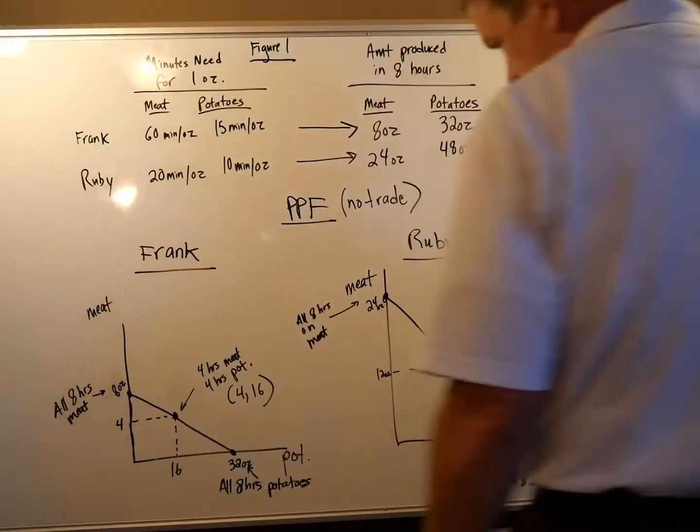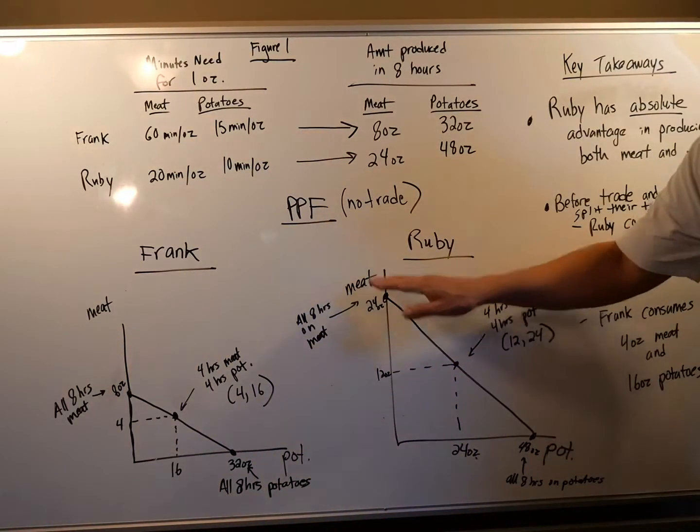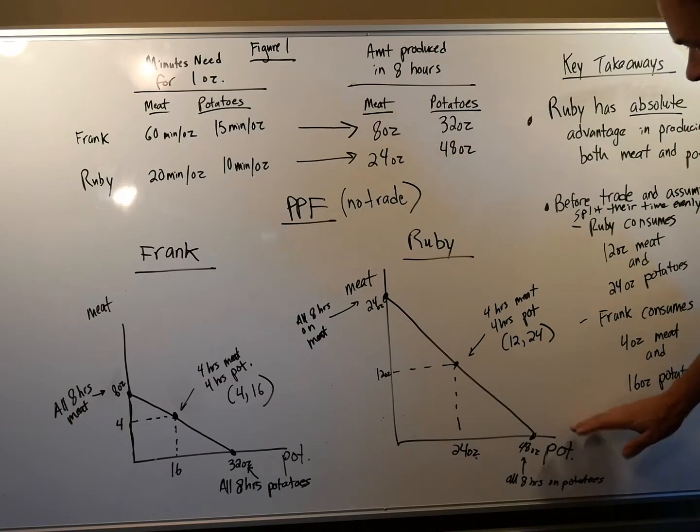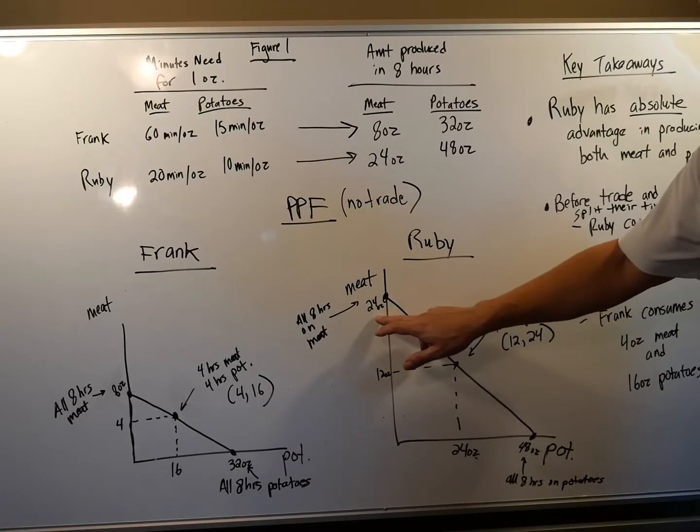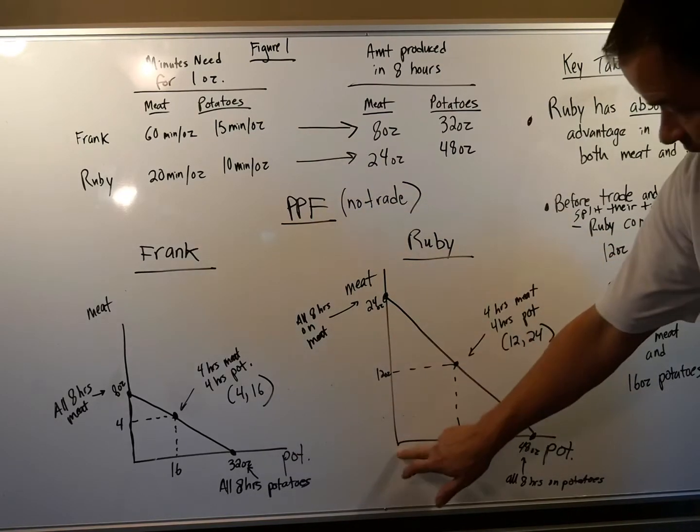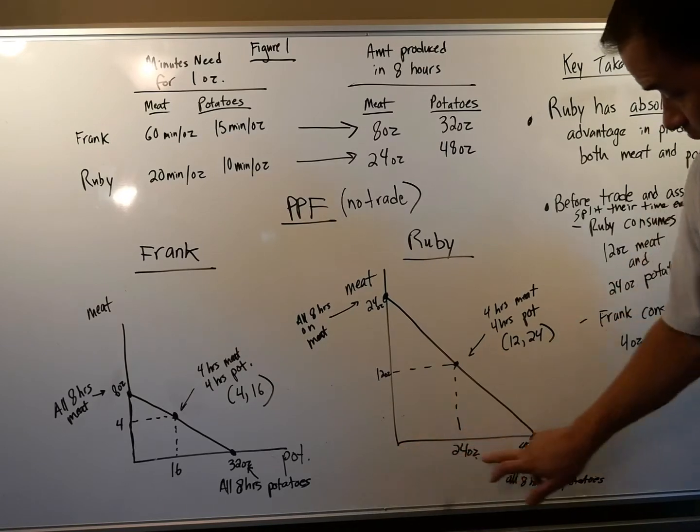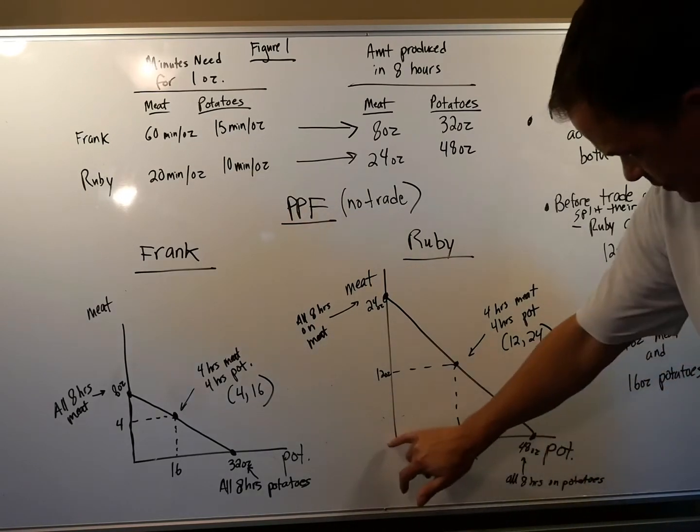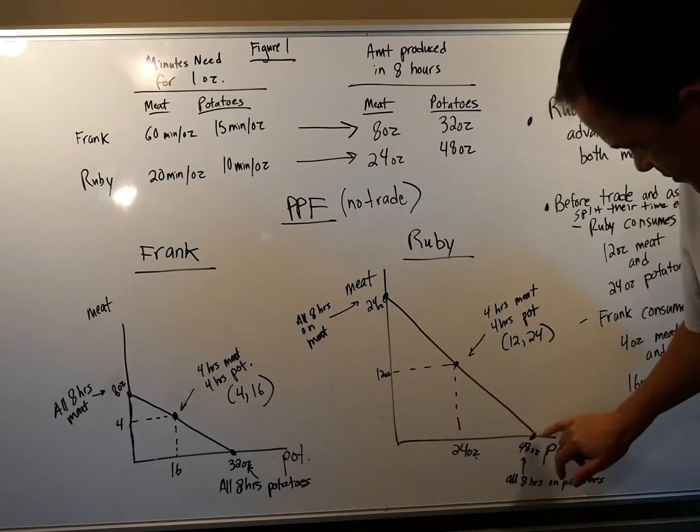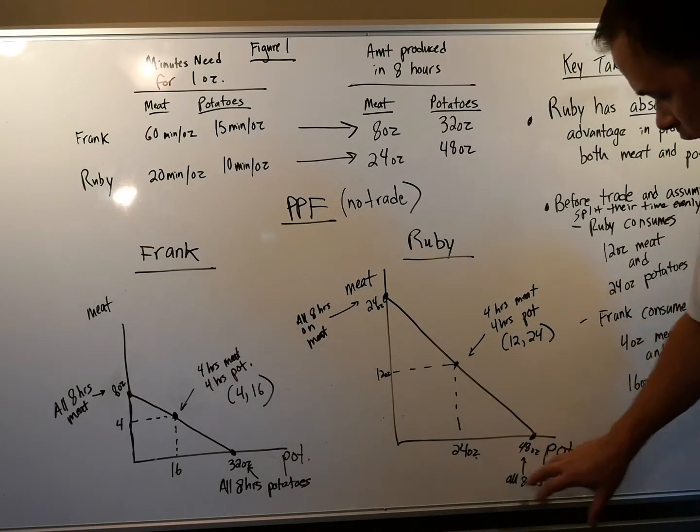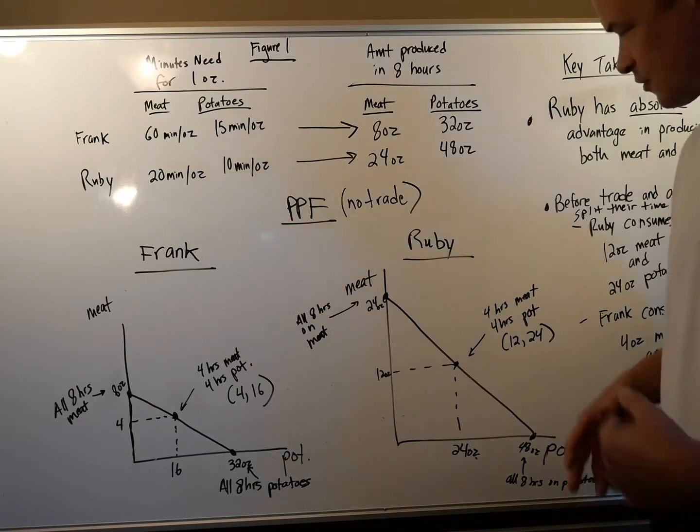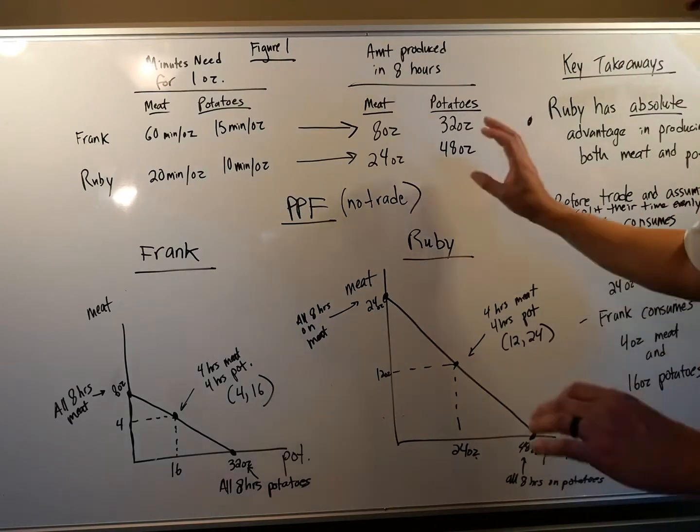Now let's look at Ruby with her PPF. Same thing, we've got meat on the vertical axis. We've got potatoes on the horizontal axis. If she goes all meat, this is 24 ounces of meat, but that is zero potatoes. Now, if she goes all potatoes, but zero meat, you got 48 ounces of potatoes if you go all in on eight hours of potatoes. Chances are she's going to split her time between the two. Again, they're not trading yet.